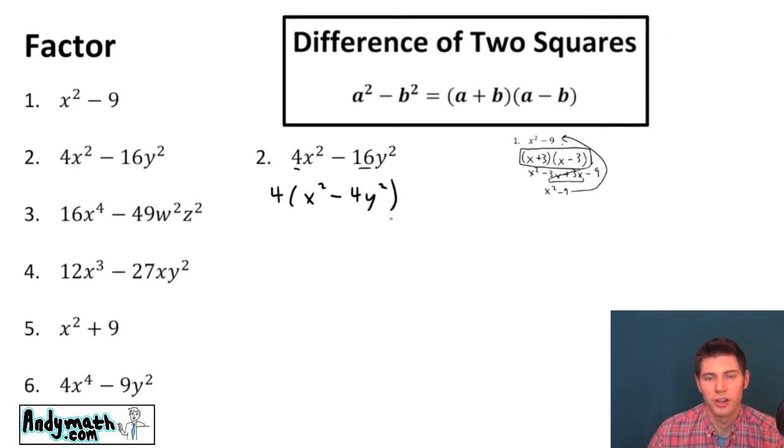Now we're ready to do the difference of two squares. So we'll bring down the four again and then we have two sets of parentheses. So square root of x squared is x and we'll have the plus and the minus. And the square root of four y squared we want to square root everything. So we're also going to square root the four in addition to the y squared. So square root of four is two and square root of y squared is y. Now we are done.